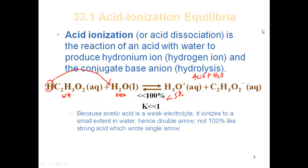Because acetic acid is a weak electrolyte, it ionizes to a small extent in water — hence the double arrow. It's not 100% like a strong acid, which we wrote with a single arrow. It's way less than that, something on the order of less than 5% ionization. So we're going to have to calculate how much hydronium is formed. When we have a strong acid, the concentration of the acid directly gives the concentration of hydronium. For a weak one, the concentration of the acid does not directly give me the concentration of hydronium — we have to do a calculation to figure it out.